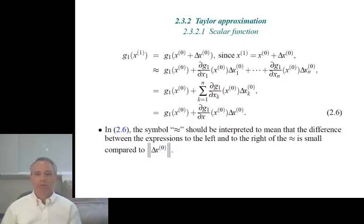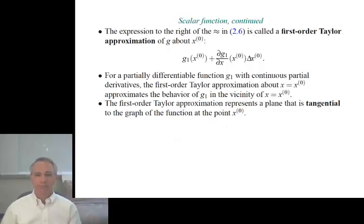If I add those terms together and if I collect the entries of the partial derivatives of g1 by the xk into a row vector, I can write that out as in the last line of equation 2.6. g1 of x1 is approximately equal to g1 of x0 plus the partial derivatives of g1 by the x evaluated at x0 times delta x0. That approximately equal to, you should think of that as meaning the difference between the expressions to the right and the left is small compared to the norm of delta x0. The norm means the length of a vector. And as I think I already said, that gives me the first order Taylor approximation. For a partially differentiable g1 with continuous partial derivatives, first order Taylor approximation approximates g1. It actually corresponds or represents a plane that's tangential to the graph of the function.